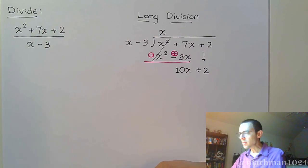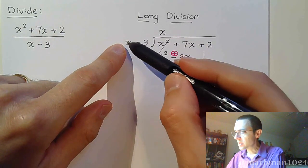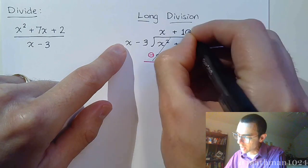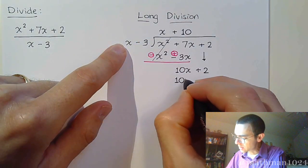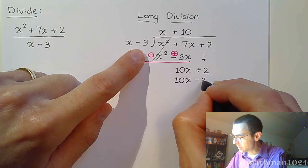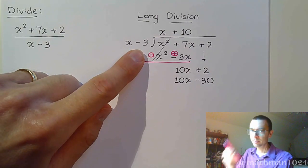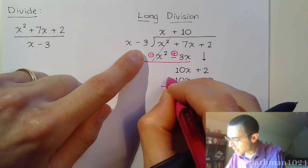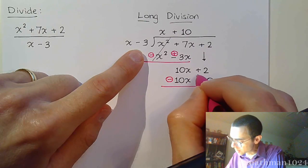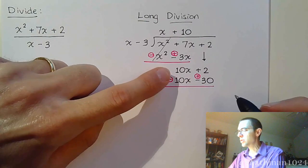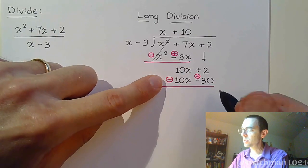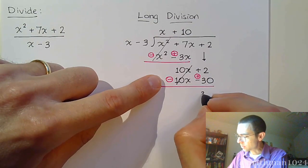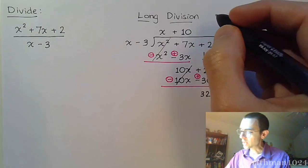We start all over — come back to x: what would you multiply x times to get 10x? That would be positive 10. So 10 times x is 10x, 10 times negative 3 is negative 30. Again, draw the line and change the signs: this becomes minus 10x and this becomes plus 30. These guys started off looking exactly the same so that when I subtract they are additive inverses, and we get 32.